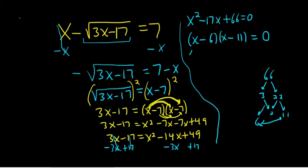You have a product equal to 0, so you set each factor equal to 0. And then you get 6 and 11. And whenever you have an equation with square roots, you're supposed to check your answers. So we're going to go ahead and do that.